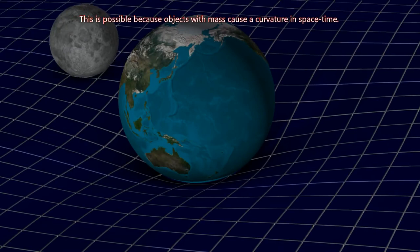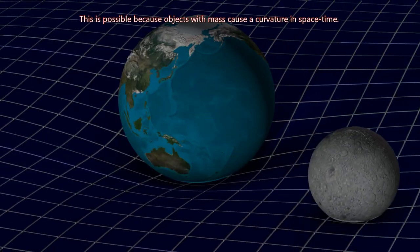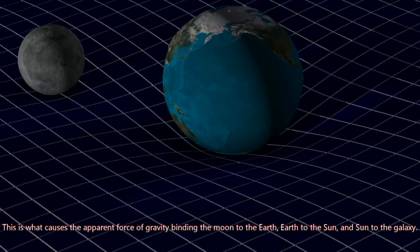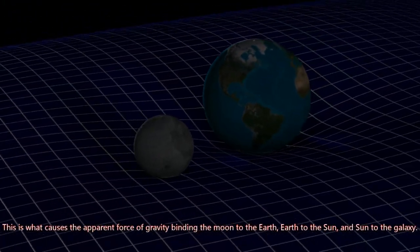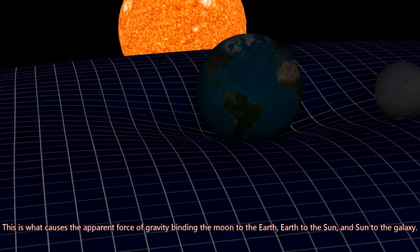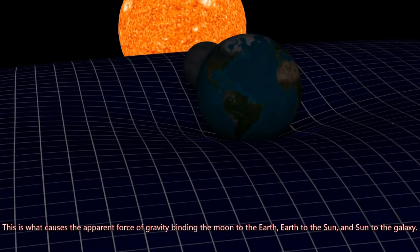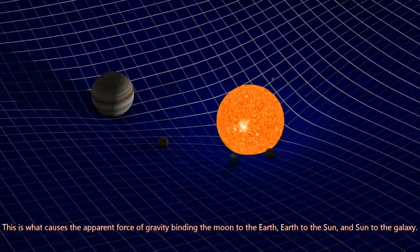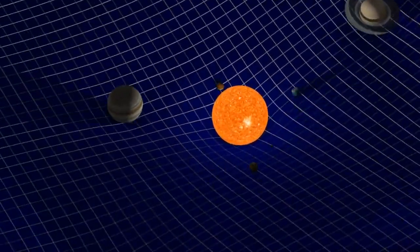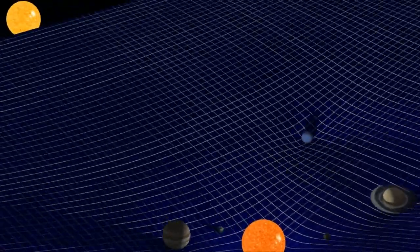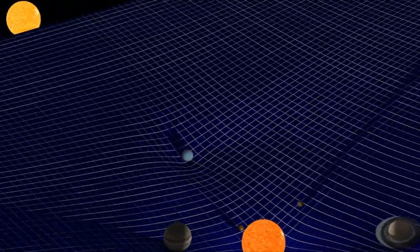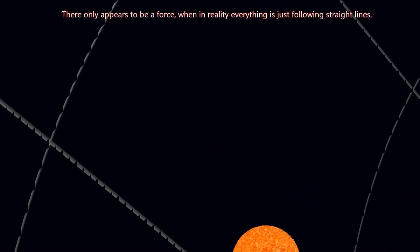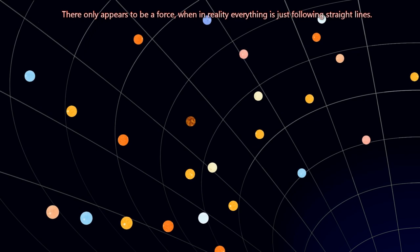This is possible because objects with mass cause a curvature in space-time. This is what causes the apparent force of gravity binding the Moon to the Earth, Earth to the Sun, and Sun to the Galaxy. There only appears to be a force, when in reality everything is just following straight lines.